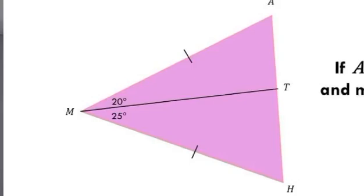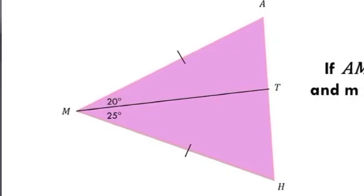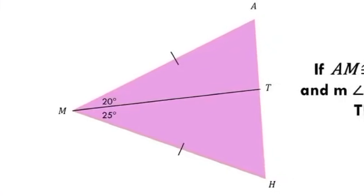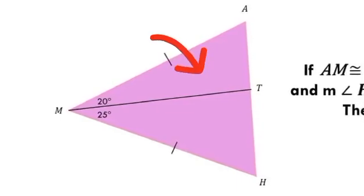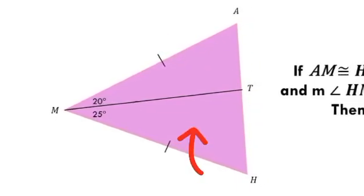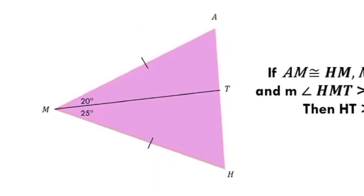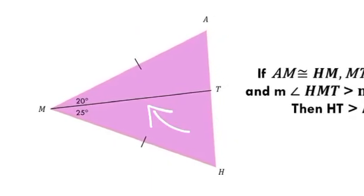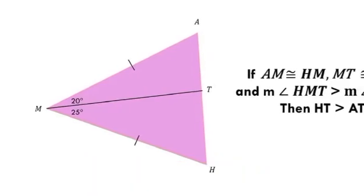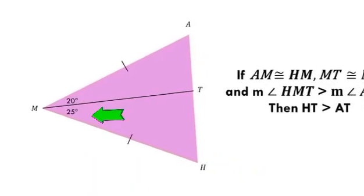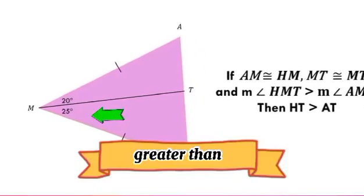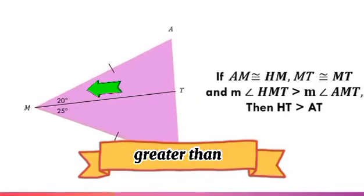Okay, so we have here two triangles joined together: triangle MAT and triangle MHT. AM is congruent to HM, MT is congruent to MT by reflexive property, and measure of angle HMT is greater than measure of angle AMT.